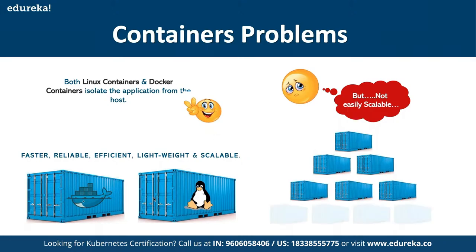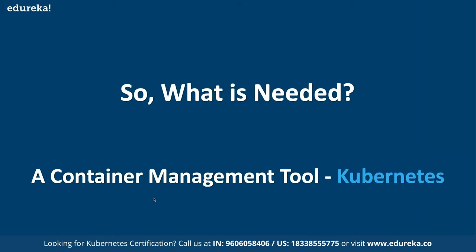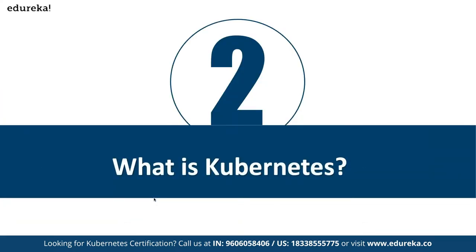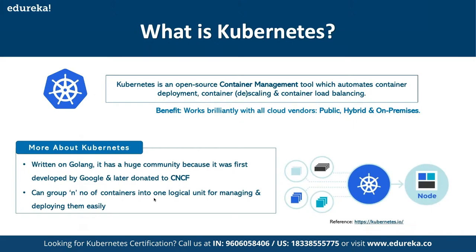The main problems before orchestration were that containers could not communicate with each other, had to be deployed and managed carefully, auto-scaling was not possible, and traffic distribution across a large cluster was always challenging. That's where solutions like Kubernetes were introduced. Kubernetes leads in container orchestration for large-scale infrastructure, while Docker Swarm is useful for small-scale infrastructure.